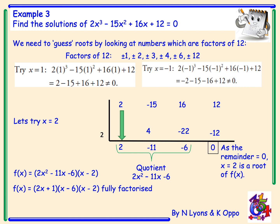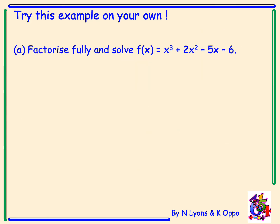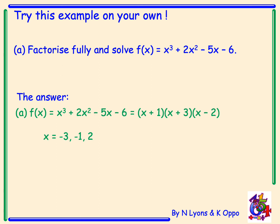We were asked for the solutions of the polynomial, so we equate each bracket to 0 and solve for x, giving x = -½, x = 6, or x = 2. Try this example on your own — please pause the video. The answer, fully factorised, is (x + 1)(x + 3)(x - 2), solving to give x = -3, x = -1, and x = 2.